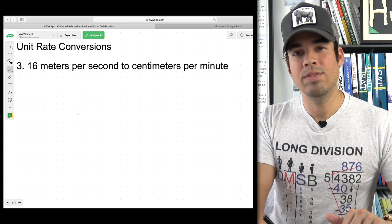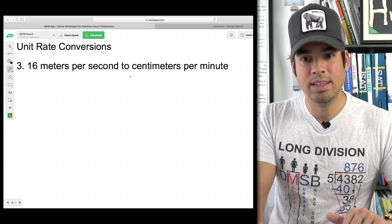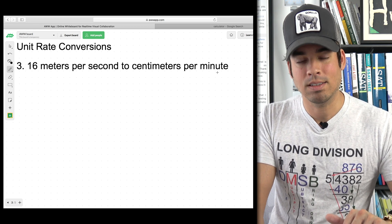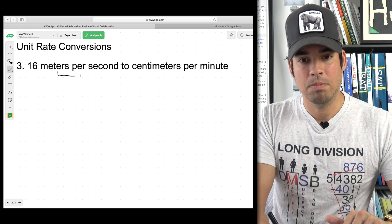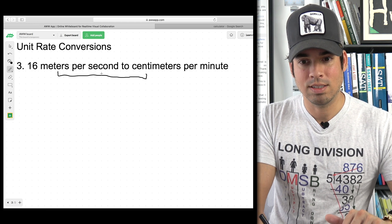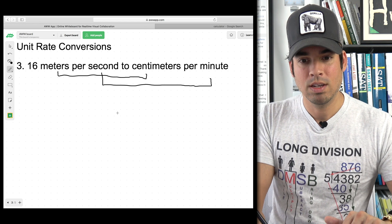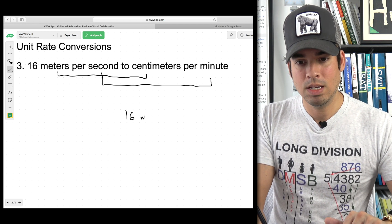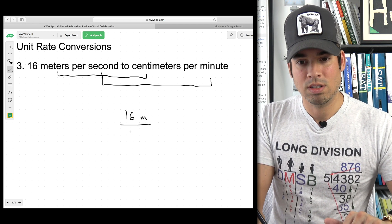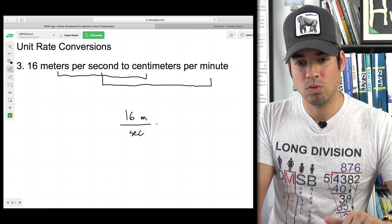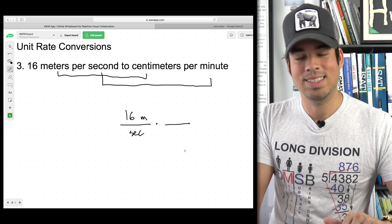Last one, we've got 16 meters per second to centimeters per minute. So we're going from meters to centimeters and seconds to minutes. Let's again use the camp method. So we're going to start off with 16 meters in the center per second. And let's go to the right side. Let's go meters to centimeters.